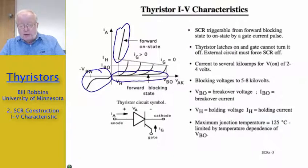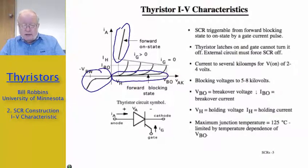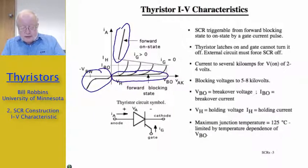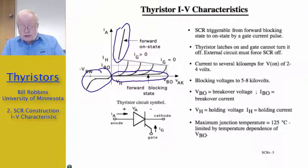Maximum operating temperature for the device is about 125 degrees centigrade. That's limited by the fact that at temperatures above that, the breakover voltage begins to decrease. The circuit symbol for a thyristor looks like a diode symbol with an extra terminal added on the bottom side near the cathode for the gate electrode.